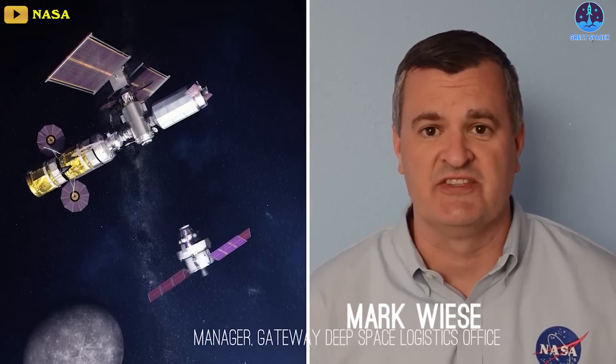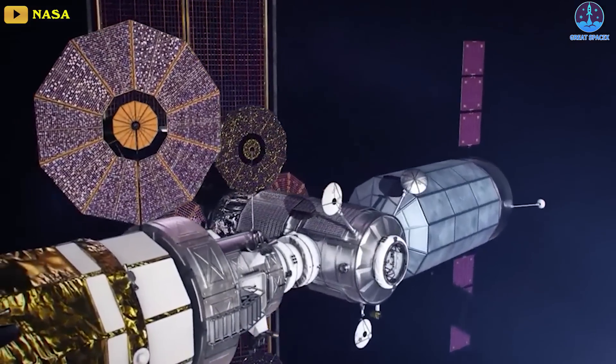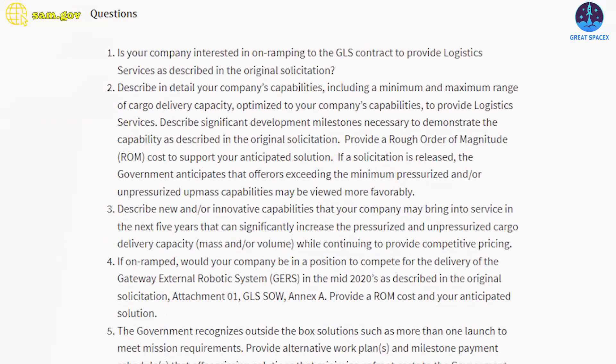However, the document gets far more interesting and suggestive. Later, NASA spelled out what exactly it wants respondents to discuss. In a list of eight main questions, the agency repeatedly hints at a desire to substantially expand the scope of GLS.